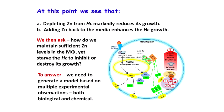We note that depleting the zinc from the HC markedly reduces its growth. Adding zinc back enhances its growth — no question. That is, we add T-Pen, but then we add more zinc, and back it comes. We ask: how do we maintain sufficient zinc levels in the macrophage, yet starve the other one?